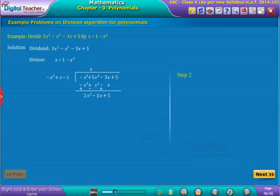After we obtain remainder as 3, we stop further division process since degree of remainder 3 is 0, which is less than degree of divisor 2.